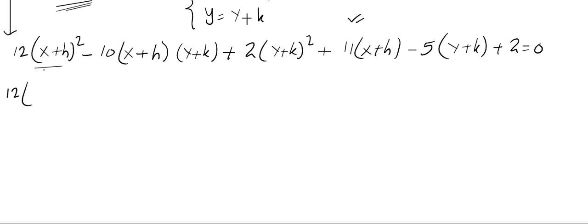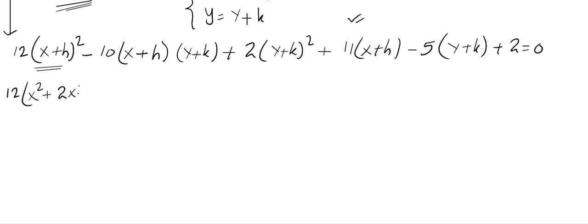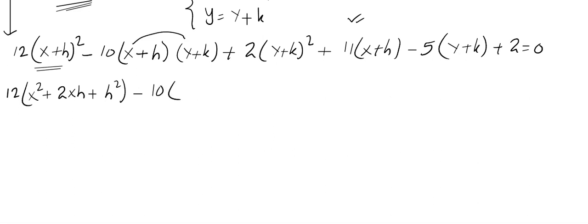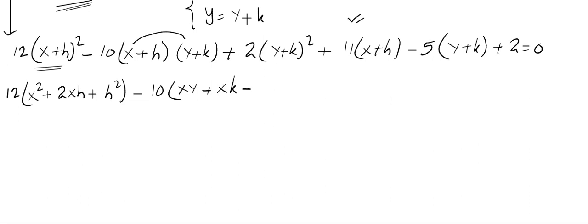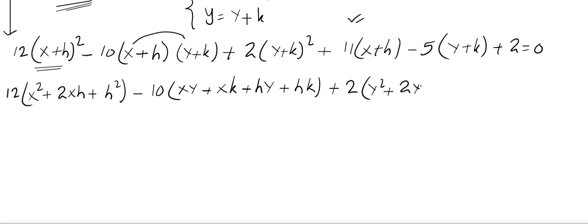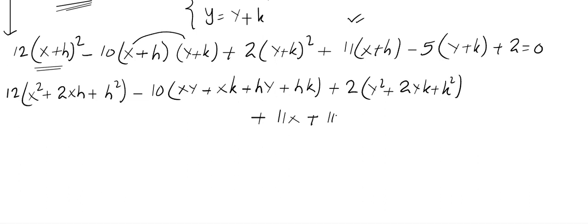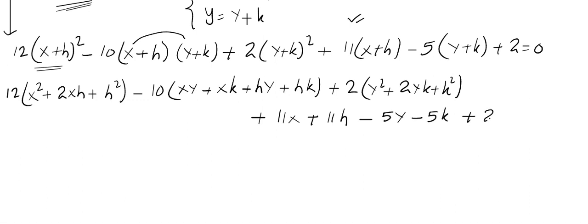Let us simplify this. Expanding using (a + b)² = a² + 2ab + b²: we get 12(X² + 2Xh + h²) − 10(XY + Xk + hY + hk) + 2(Y² + 2Yk + k²) + 11X + 11h − 5Y − 5k + 2 = 0. Do not simplify further — call it equation number 1.